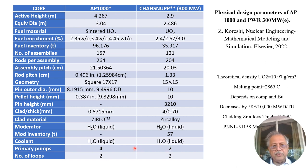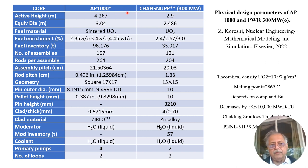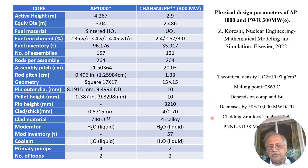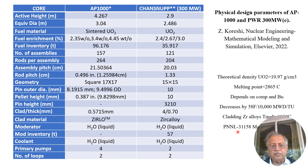The number of primary pumps depends on the coolant flow rate, which is determined by the thermal energy being removed — larger for bigger plants. The melting point of UO2 is typically 2865°C, depending on composition and burn-up; it decreases by about 58°F for every 10,000 megawatt-days per tonne. Cladding temperature data is taken from the PNNL report 31158 material libraries, which provide the relevant properties.